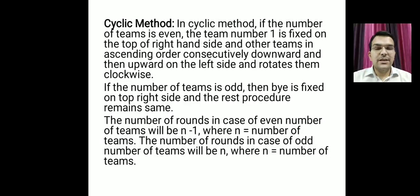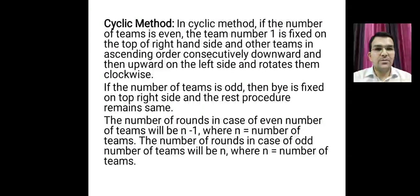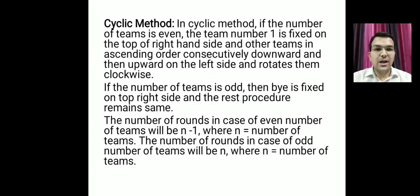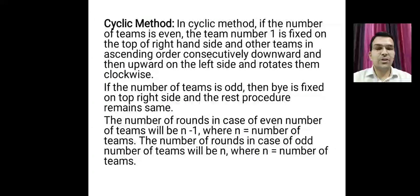In the cyclic method, if the number of teams is even, team number one is fixed on the top-right side of the fixture. If the number of teams is odd, a bye is fixed on the top-right side. The number of rounds, if teams are even, is one less than the number of teams; if teams are odd, the number of rounds equals the number of teams.